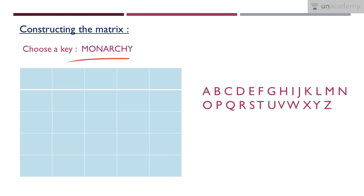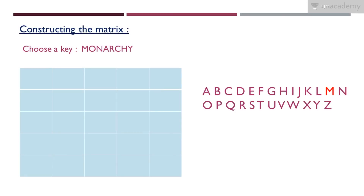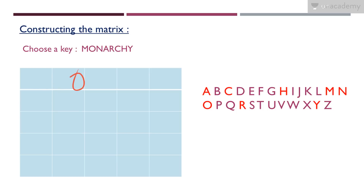Let the keyword be 'monarchy'. The keyword can be anything — it's your choice, but I selected monarchy. Now we have a 5x5 matrix, so 5 rows and 5 columns. We need to write the letters of the keyword in the first cells. The alphabets in the keyword are M, O, N, A, R, C, H, Y — 8 letters. So we fill these cells with these letters in order: M, O, A, N, R, C, H, Y.